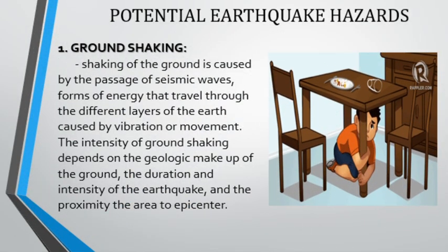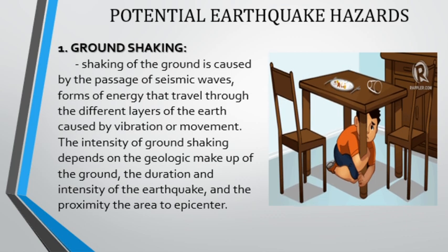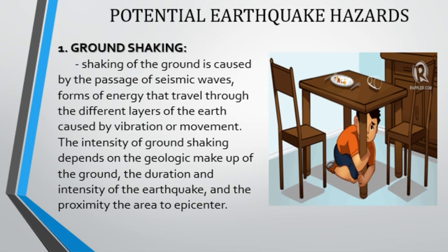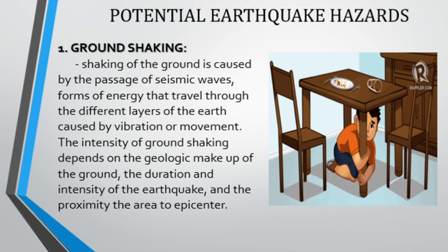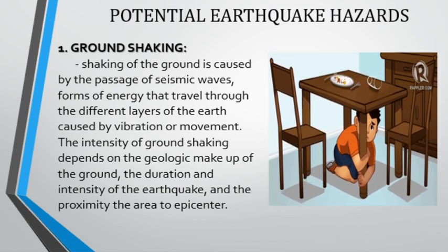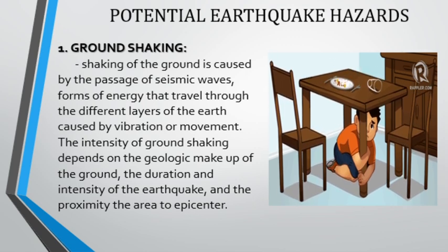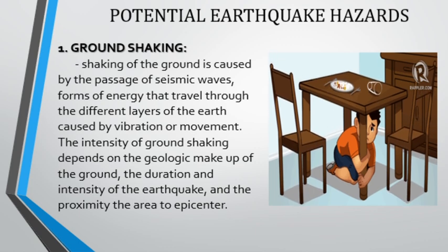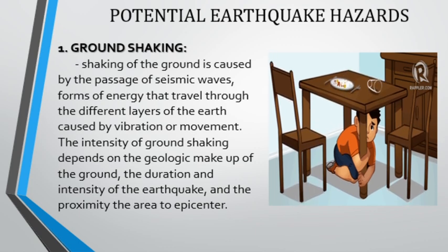What are the potential earthquake hazards that we must all be aware of? First is ground shaking, caused by the passage of seismic waves — forms of energy that travel through the different layers of the Earth, resulting in vibration or movement. The intensity or strength of ground shaking depends on the geologic makeup of the ground, how long the earthquake took place, and your location and proximity to the epicenter.